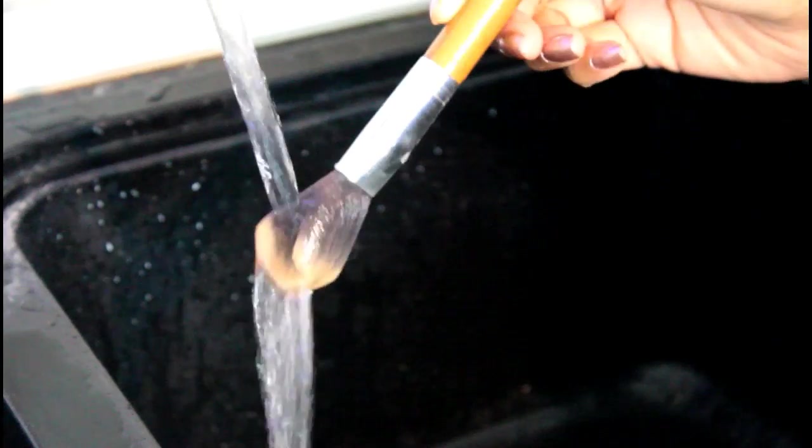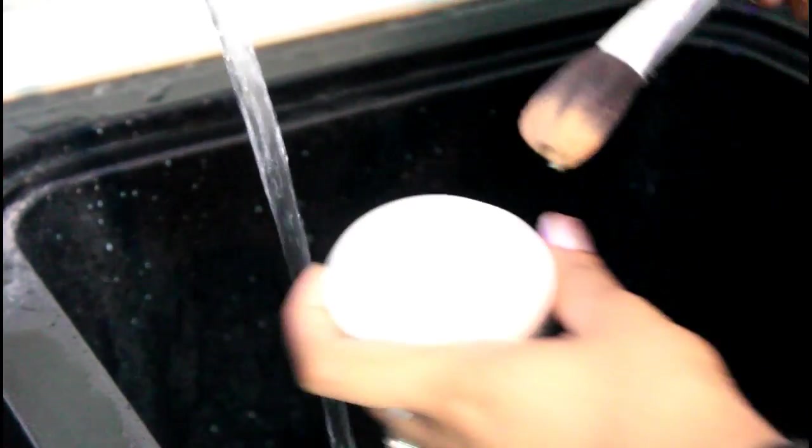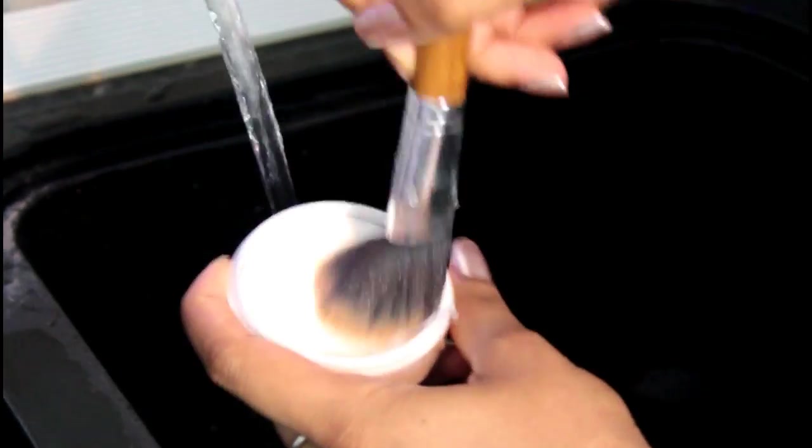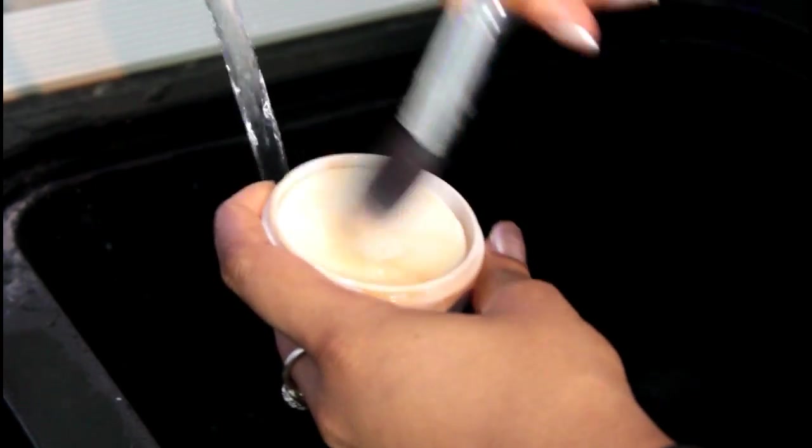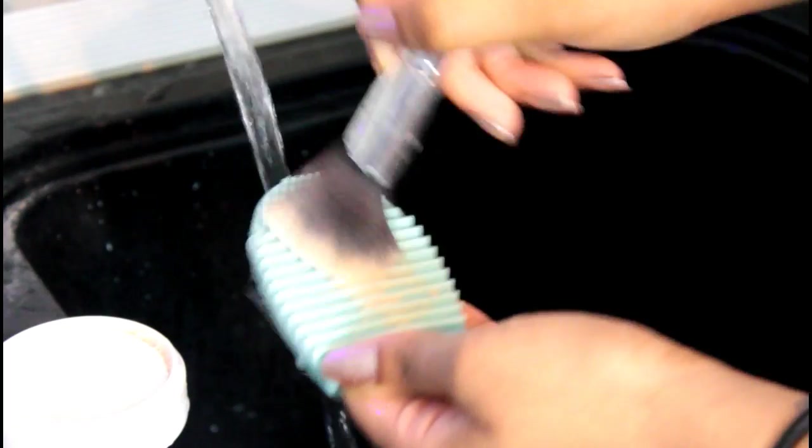So here's my dirty brush. I like to wet it first, and please make sure that when you wash your brushes, try to not get the water in the barrel, like the silver part of the brush, because the glue's in there. If you get water in there, it's going to soften the glue up and then your brush is just going to be ruined over time.